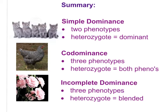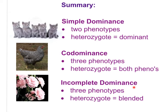Let's summarize everything. Simple dominance — simple Mendelian genetics with dominant and recessive — gives us two phenotypes, and the heterozygote is expressed as the dominant allele. Codominance always has three different phenotypes, and the heterozygote has both phenotypes expressed. Incomplete dominance also has three phenotypes, just like codominance, but the heterozygote appears blended.